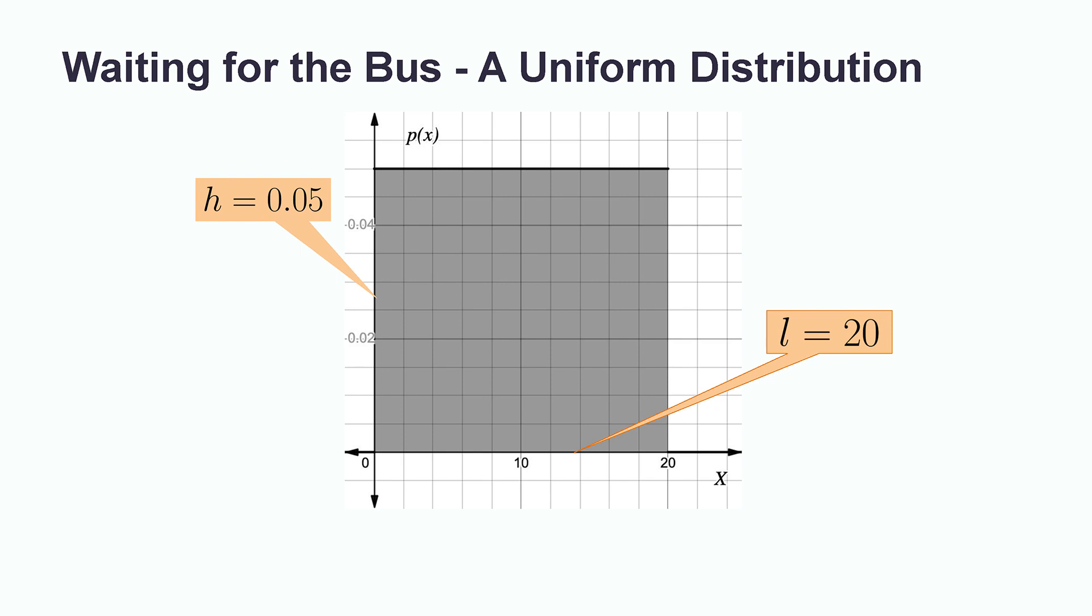To confirm that this is a proper probability distribution, let's calculate the area. The shaded area is equal to the height times the length. In our case, this is equal to 0.05 times 20. Multiplying this out leaves us with our area of 1. We can then interpret this in terms of a probability of waiting between 0 and 20 minutes by writing that the probability that 0 is less than or equal to X, which is less than or equal to 20, is equal to 1.